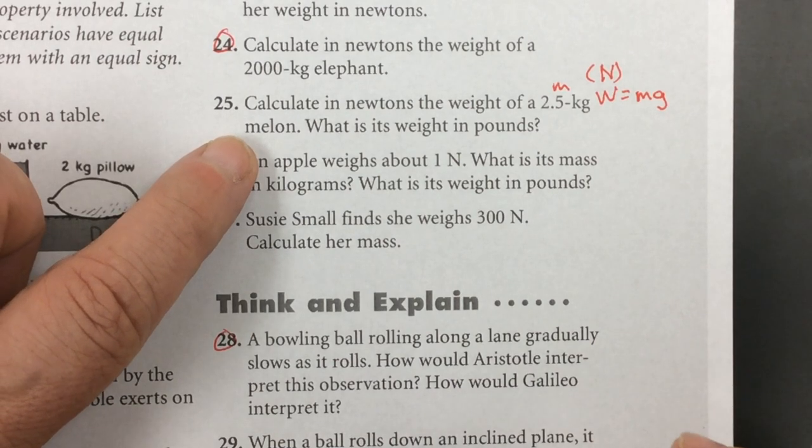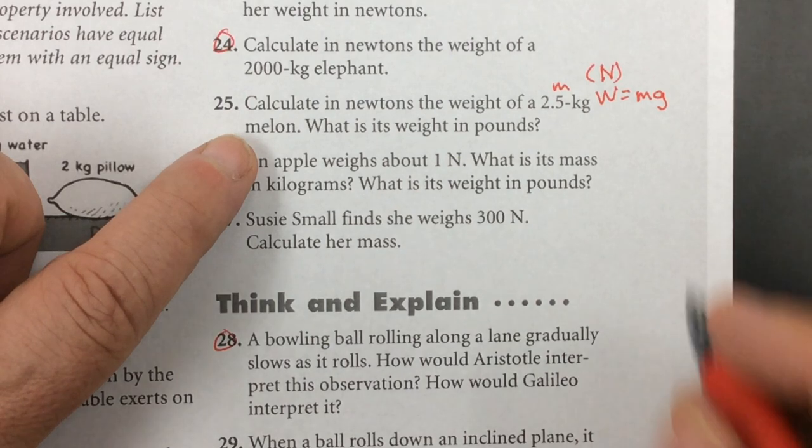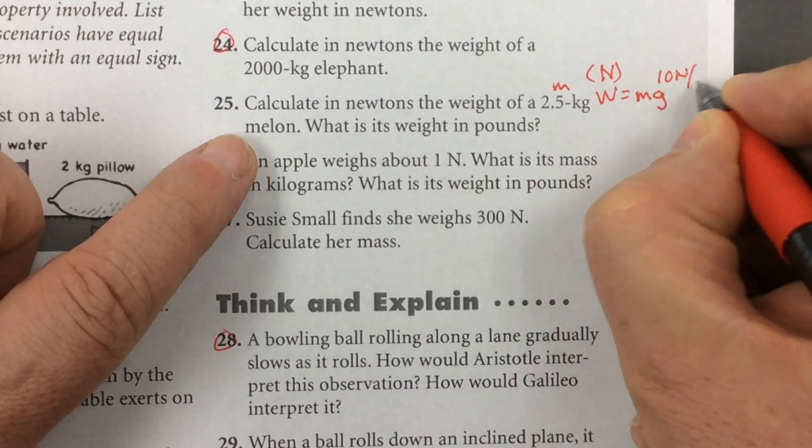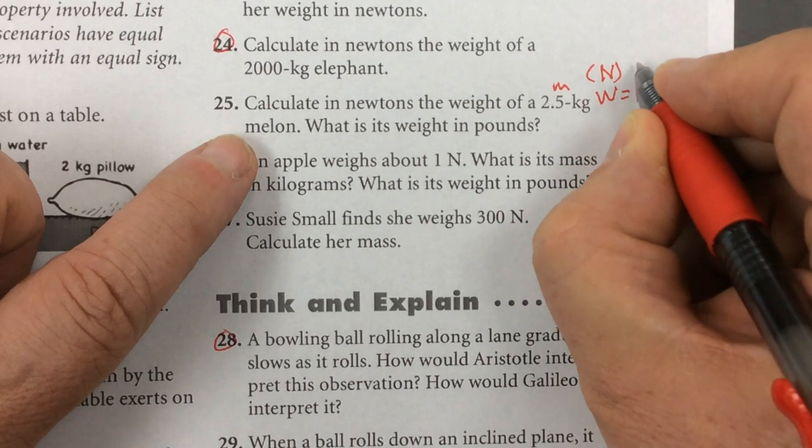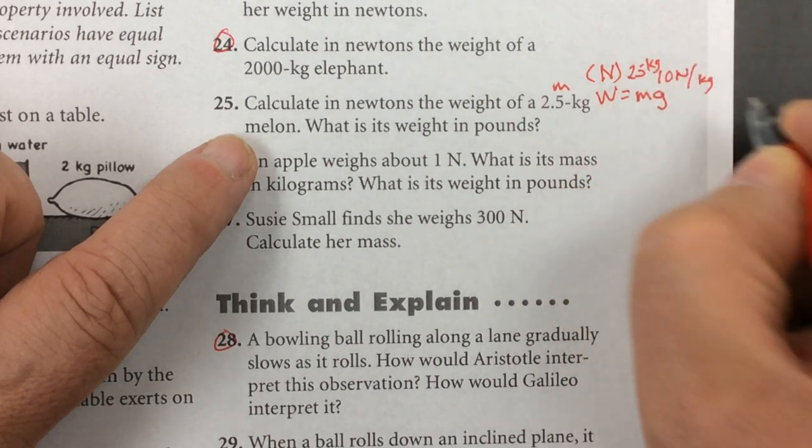So let's just use the acceleration of gravity to be 10. If you remember, this is 10 newtons per kilogram. And I've got here a 2.5 kilogram melon.